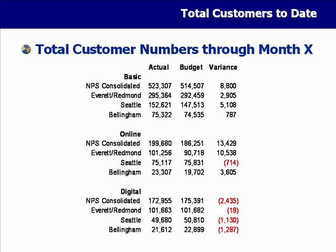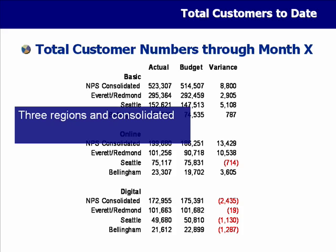Looking at this slide, there are three regions: Everett, Redmond, Seattle, and Bellingham, plus a consolidated number. I'd want to discuss each region before looking at the consolidated total, but that's not apparent from how it's presented. The important number here is actually the variance — actual versus plan — because we're partway through the year and need to see where we stand and what we can do about it for the rest of the year.